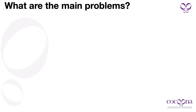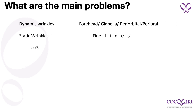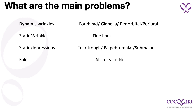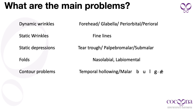What are the main problems? It starts with dynamic wrinkles because of overuse of muscles, particularly in the forehead region, glabella, periorbital, and perioral regions. Then the wrinkles become static, like fine lines imprinted on the skin. Then there are static depressions like tear trough deformity, palpebral malar and submalar depressions. Then there are folds in the nasolabial and labiomental regions. Then contour problems because of weight or fat changes — temporal hollowing, malar bulges, jaws, pre-jowl sulcus.